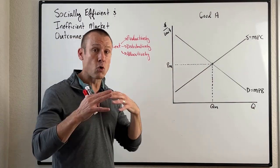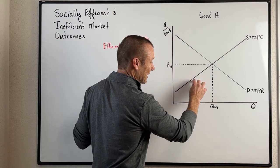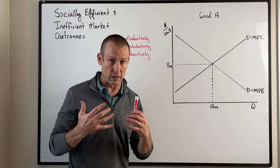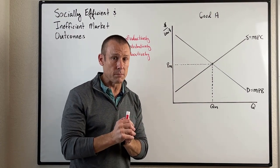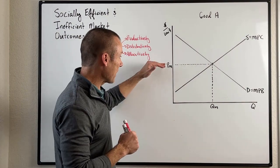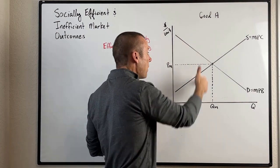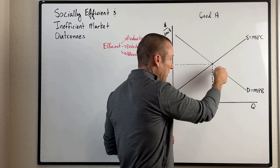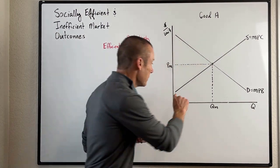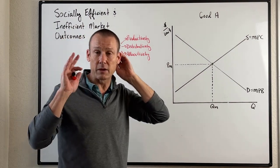Why are we also productively and distributively efficient? When price coordinates economic activity, producers represented by dots below the price produce the good. Any producers with higher costs won't end up producing it — only the most efficient producers remain in the marketplace. On the demand side, price rations the good: only those who place an expected benefit above the price get the good. People with expected benefit below the price do not. So we are productively efficient, distributively efficient, and allocatively efficient — we have maximized social surplus.